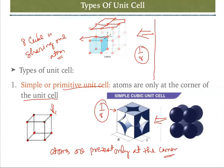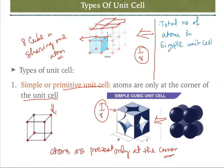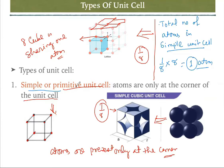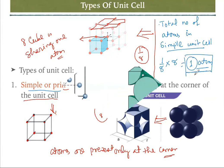To calculate the total number of atoms in a simple or primitive unit cell: each corner atom contributes one-eighth, and there are eight corners, so one-eighth times eight equals one atom. So the number of atoms present in a simple or primitive unit cell is one atom — remember that.